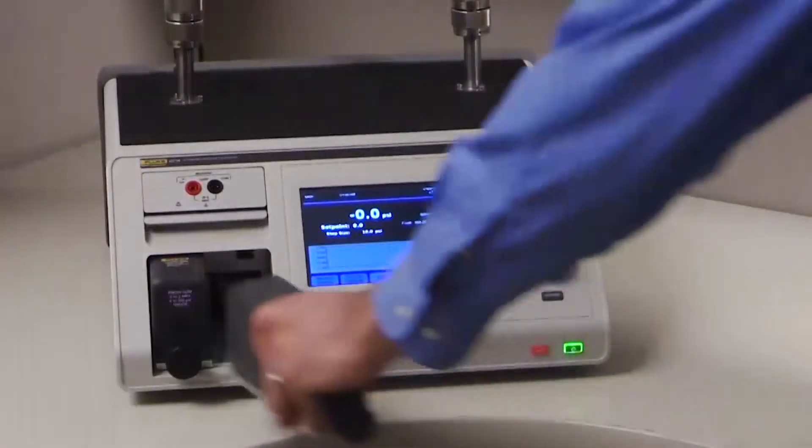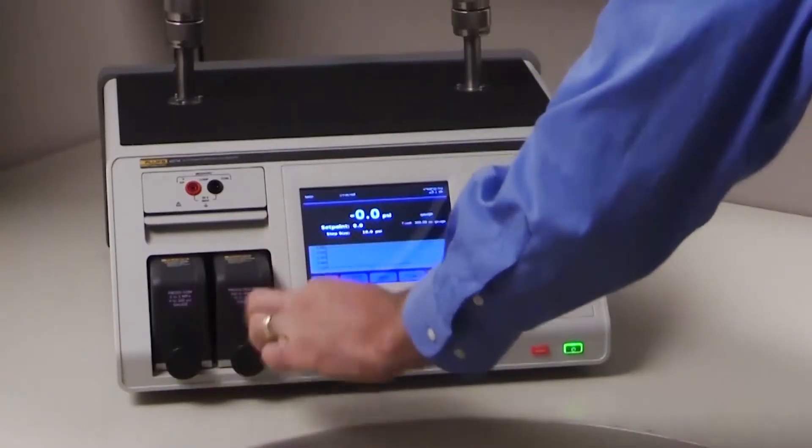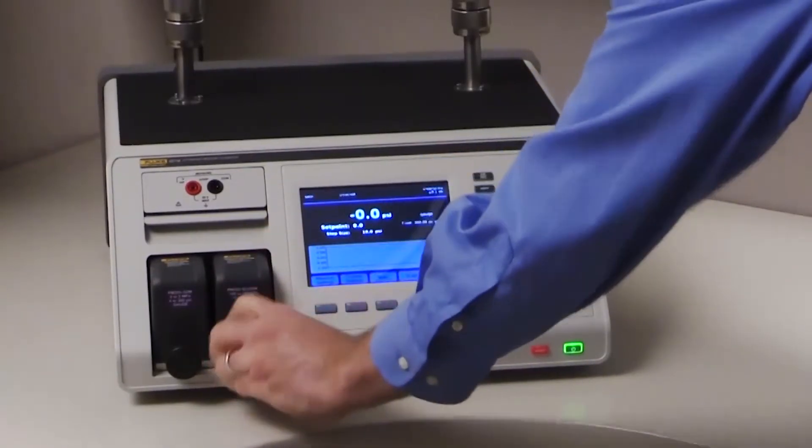Modules are easy to install. Simply slide a module into one of the two available slots. Then turn the torque limiting knob until it clicks.